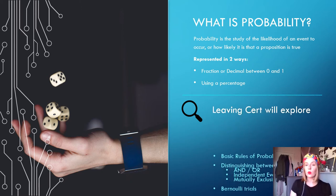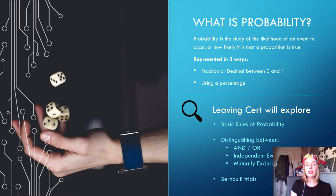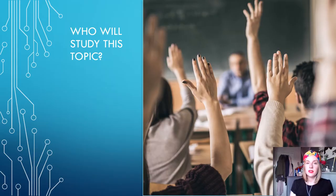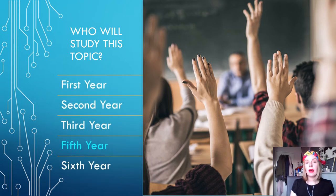Students in the leaving certificate will explore the rules of probability, including distinguishing between the terms and, or, mutually exclusive events and independent events. They will also use some or all of the addition and multiplication rules while investigating Bernoulli trials. Probability is studied in every year group, but my lesson today will be aimed at students studying ordinary level maths in fifth year.